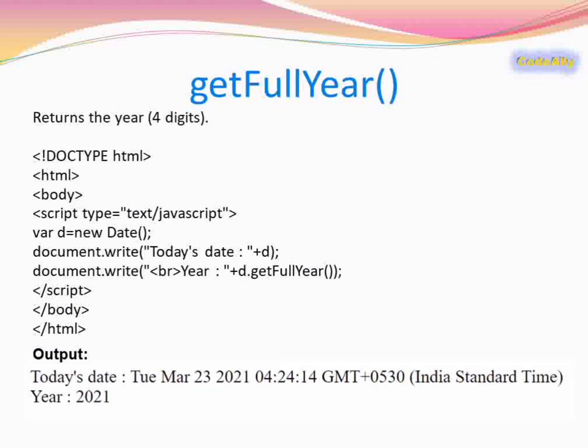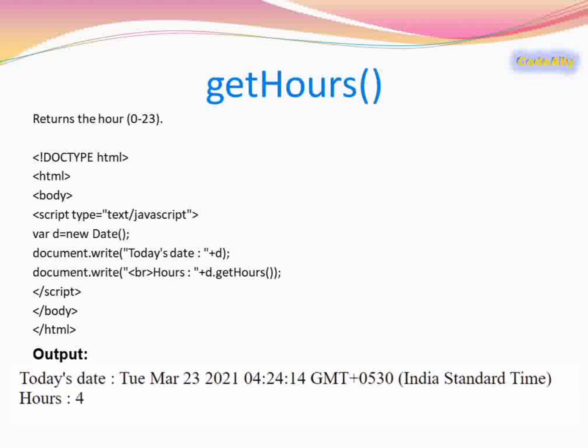The next method is getFullYear(). This returns the year as a 4-digit number. We have taken a date variable d which holds the current date, and when we apply getFullYear() we get the year 2021.